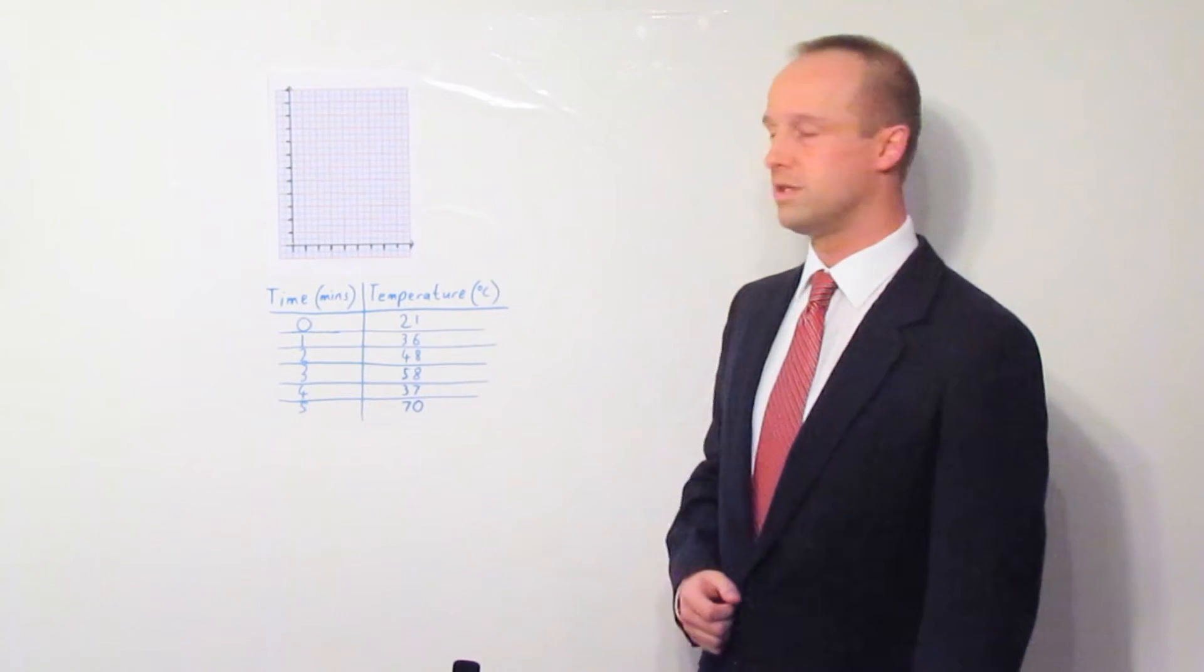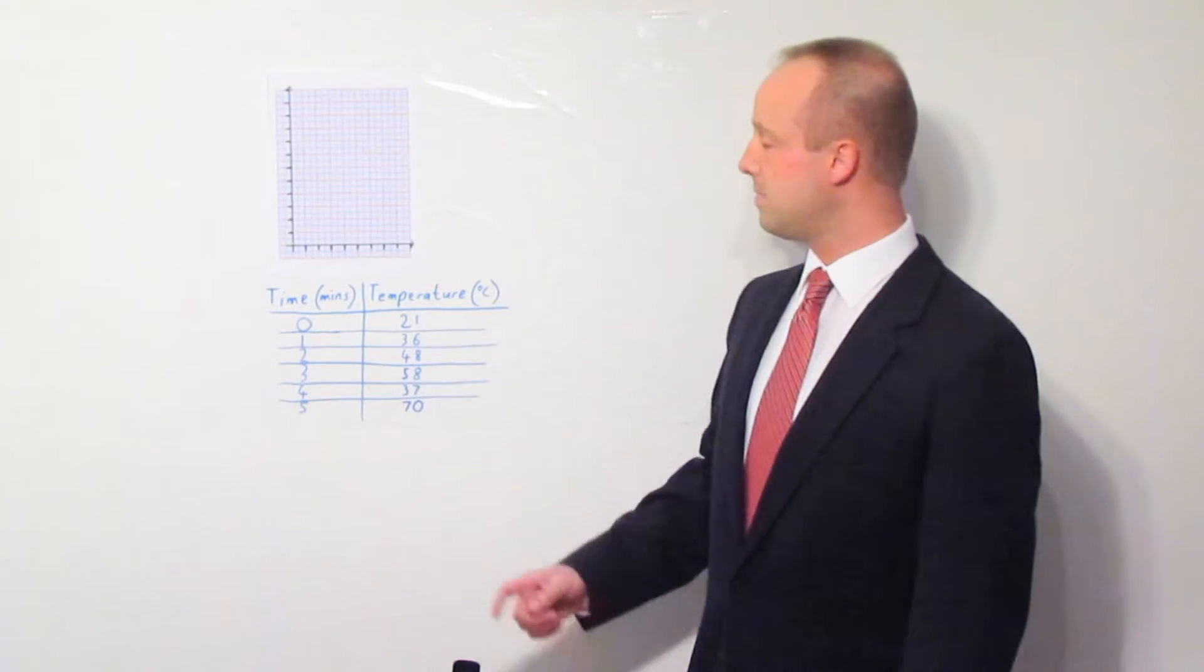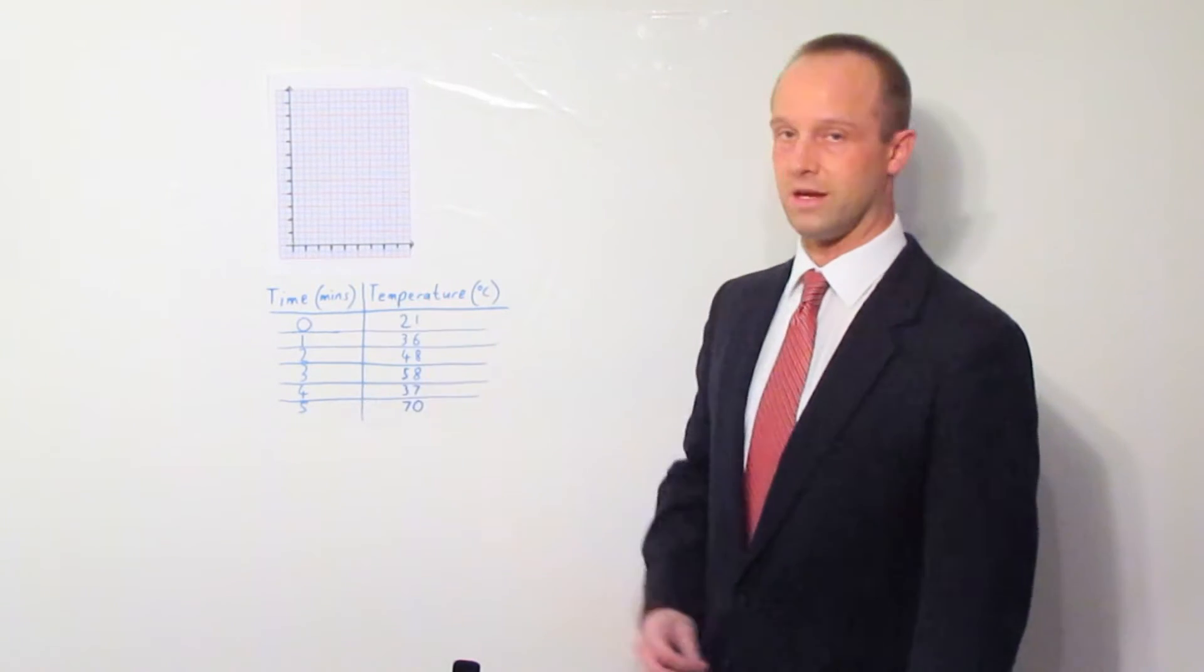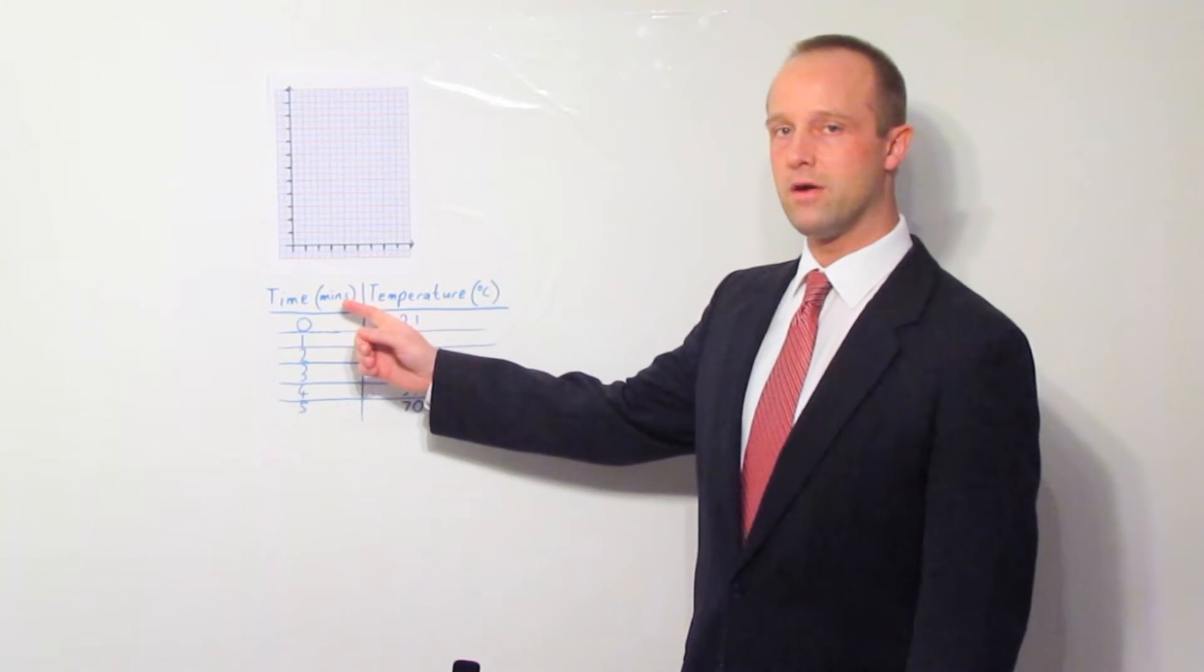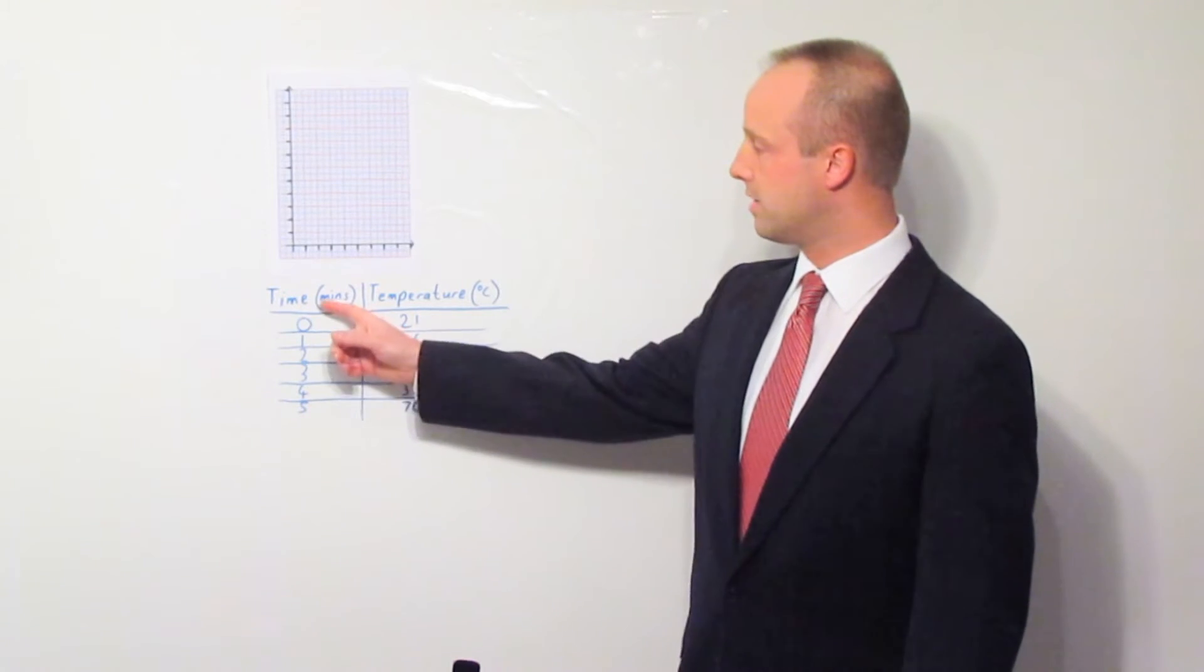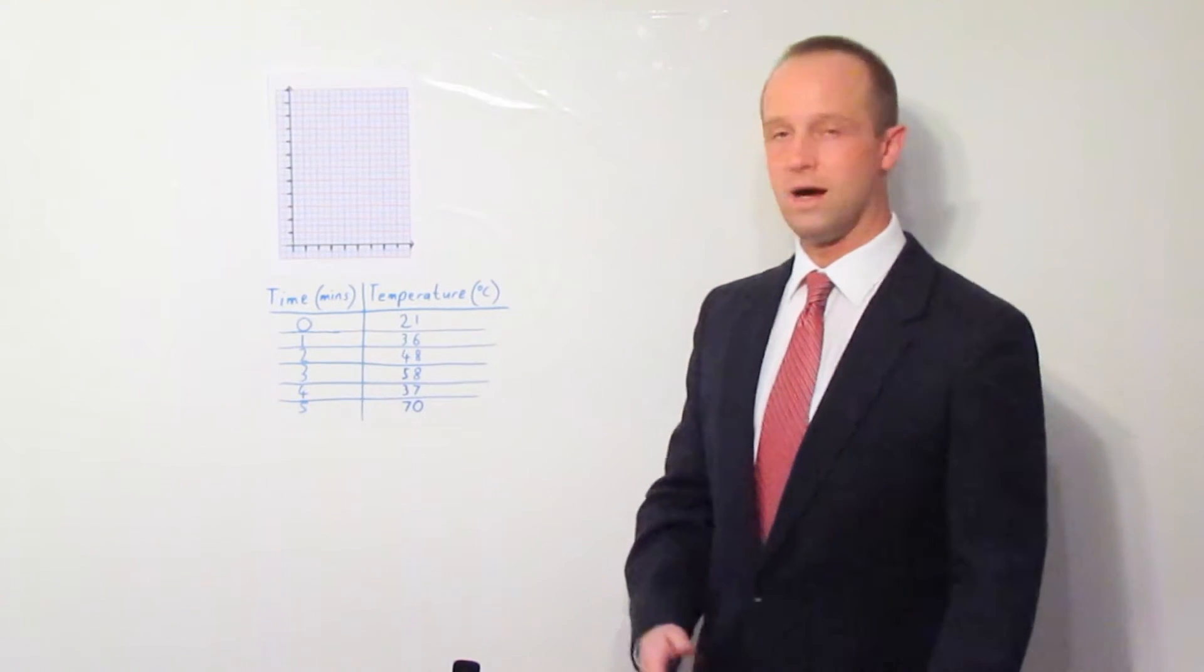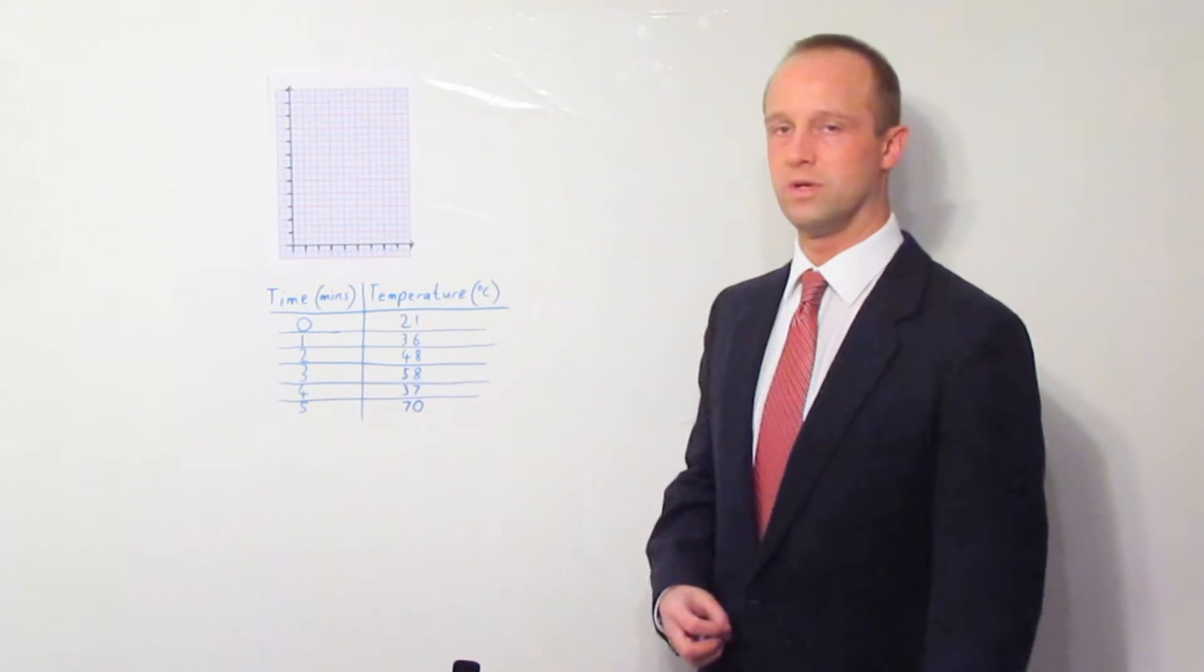When you've got that done, then you can look at your results table. But again, I'm not going to care about what these numbers are for the moment. I'm just interested in what the headings are. This left hand column should be your independent variable, and that always goes on the horizontal axis. Make sure you include the units as well. So, I've come up with some dummy information here. I've said time in minutes against temperature in degrees Celsius.